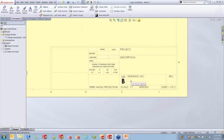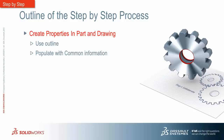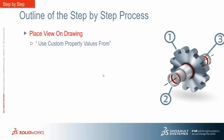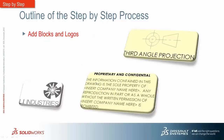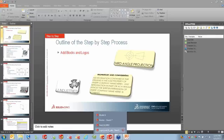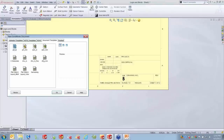That brings us to this stage — we have a title block that's missing logos and some other standard text for our organization. The best way to approach blocks and logos is to save out blocks. If you haven't done this in SOLIDWORKS, you edit your sheet format, select something — in this case a note — go to Tools > Block > Make, adding those notes to a block. Then right-click on that new block and you can save it. I have a folder where I've put a few blocks to utilize.